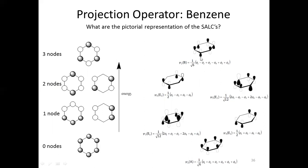For the B representation, the sign pattern is positive, negative, positive, negative, positive, negative around the ring, giving three nodal planes. So by using symmetry-adapted linear combinations, we can predict the number of nodes in the molecule: A representation has no nodes, E1 has one node, E2 has two nodes, and B has three nodes.